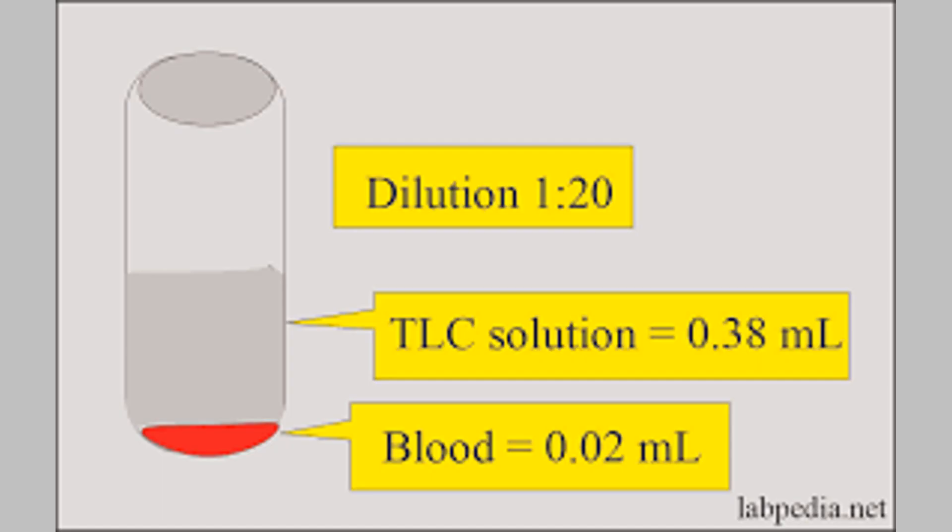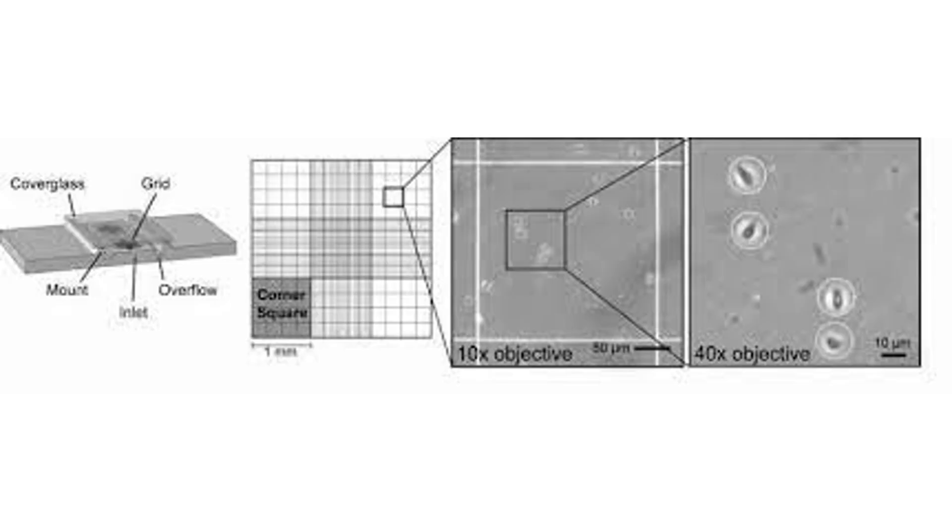Here's how a hemocytometer works and its key features. Design: A hemocytometer is a rectangular glass or plastic slide with a grid pattern etched into its surface.